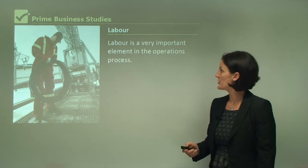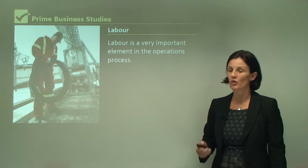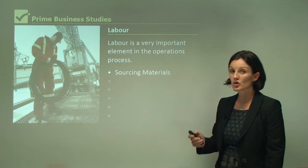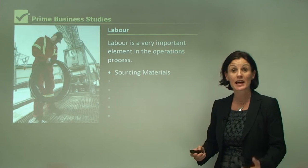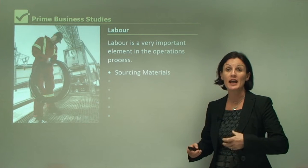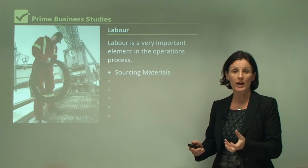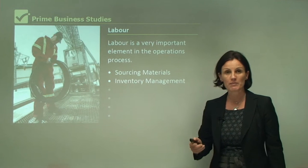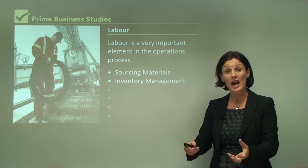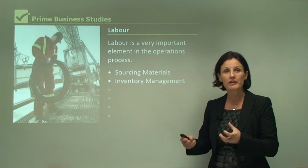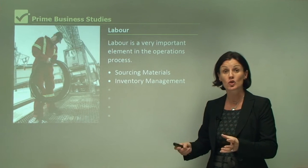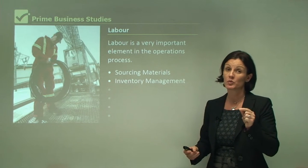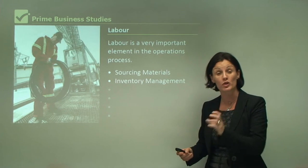Now if we look at labor first, labor is a very important element in the operations process. It's used for sourcing materials because we need to get that timber to our factory, we need to get our eggs and our milk if we're making a food product. With inventory management, quite often we get our raw materials to the factory but they're not ready for production, so we need to store those materials. That is a crucial element because we don't want them to get damaged before they're used for production.